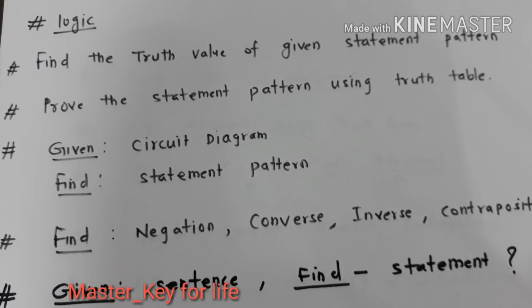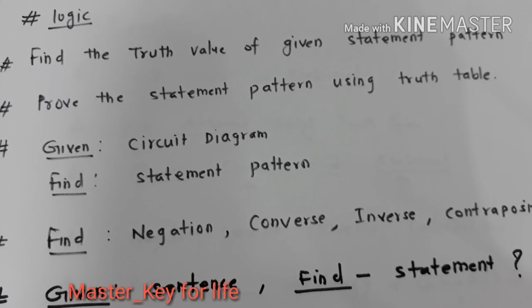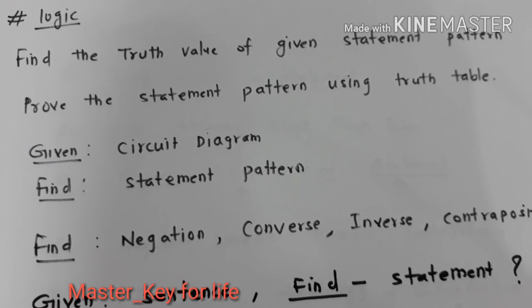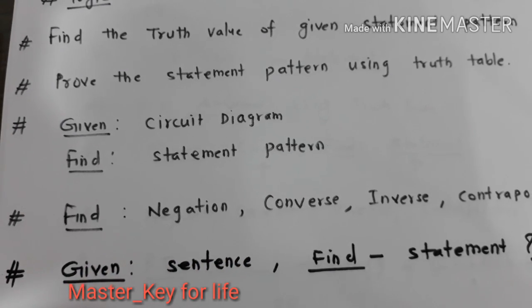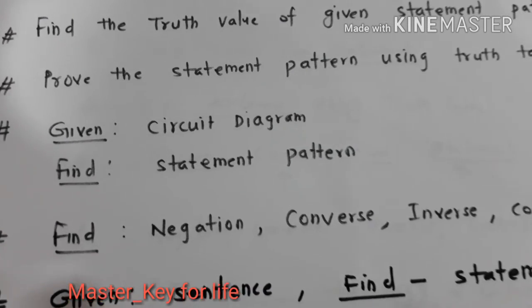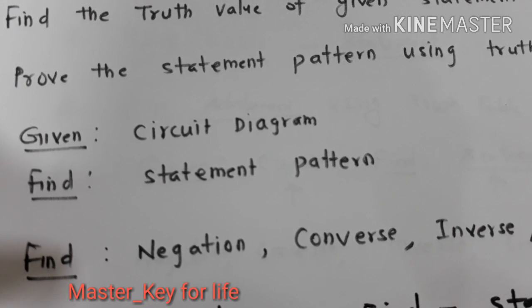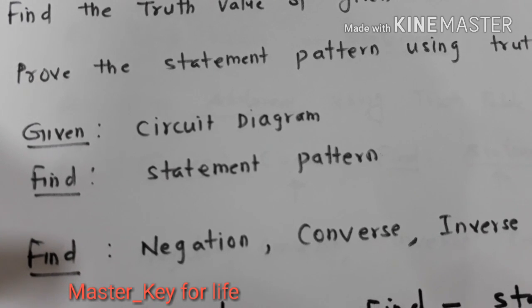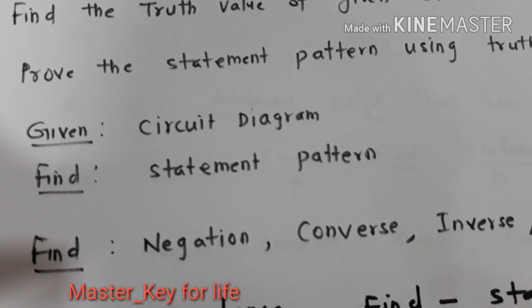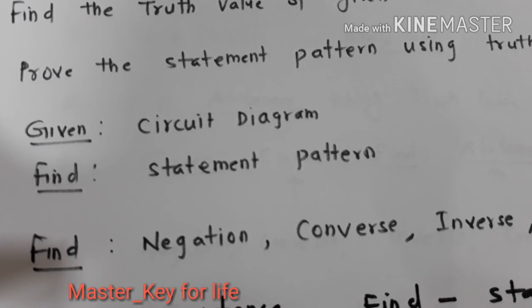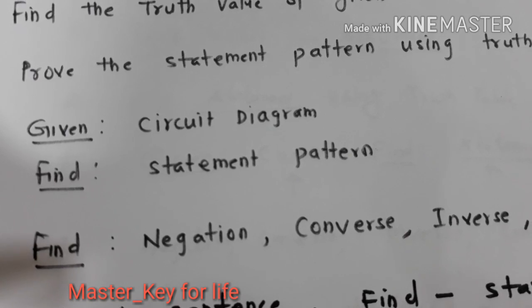Second, you have to prove any given statement pattern using the truth table method. Another important question is wherein they give the circuit diagram and they ask us to write the statement pattern for the circuit diagram. Sometimes they give us reverse. Statement pattern is given to us and we are asked to draw a circuit diagram. Very important question.